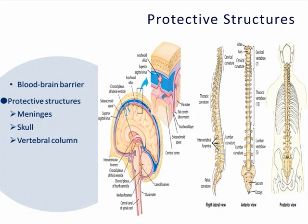These next structures are considered protective structures, including the blood-brain barrier, which is a physiologic barrier — not an actual physical barrier — between capillaries and brain tissue. It protects the brain from harmful agents, allows nutrients and gases to enter, and affects the penetration of drugs into the brain. This is really important when trying to get medications into the brain, such as antibiotics in the case of an infection. Lipid-soluble compounds tend to enter easily. Damage to the blood-brain barrier results in penetration of drugs or other substances that we don't want reaching the brain.